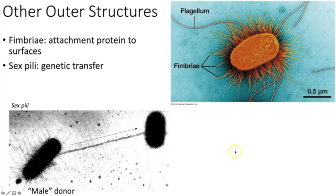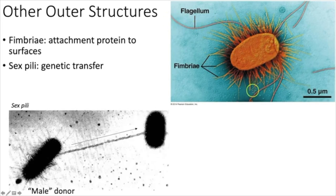Bacteria also have inclusion bodies — storage areas analogous to lysosomes and peroxisomes. These store glycogen, fats, or sugars for later use. Certain bacteria have gas vesicles, which allow them to control their buoyancy in water. There are magnetotactic bacteria that store magnetic materials in their inclusions, allowing them to orient themselves to Earth's magnetic poles.